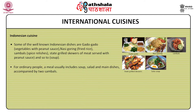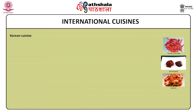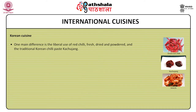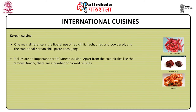Korean cuisine: in spite of the similarity to Chinese and Japanese cuisines in many basic ingredients, Korean food is different. One main difference is the liberal use of red chilli — fresh, dried and powdered — and the traditional Korean chilli paste gochujang. Pickles are an important part of Korean cuisine. Apart from cold pickles like the famous kimchi, there are a number of cooked relishes. There is great emphasis upon meat, unlike other Southeast Asian cuisines.